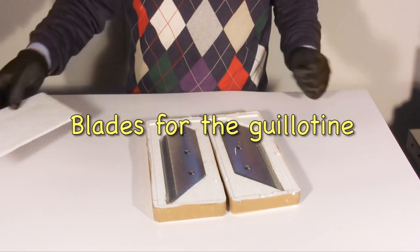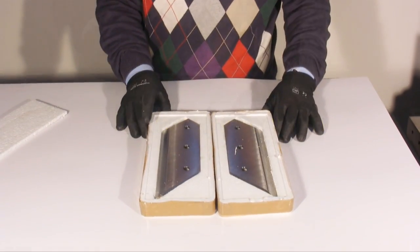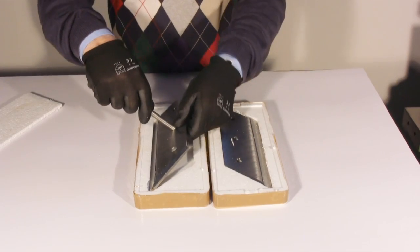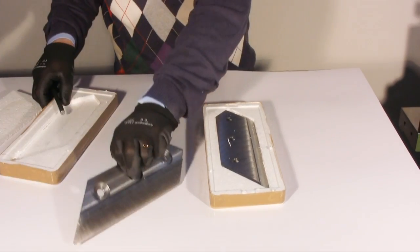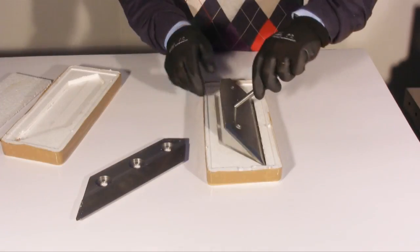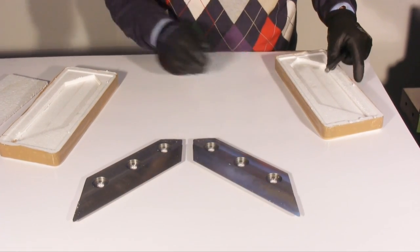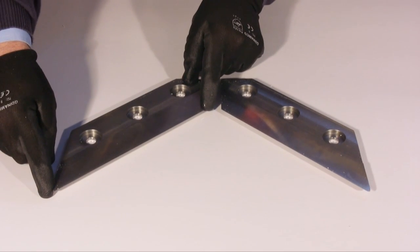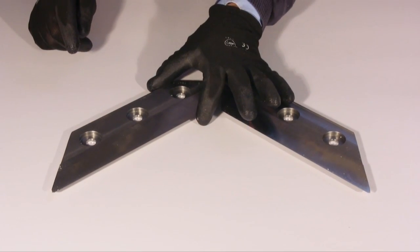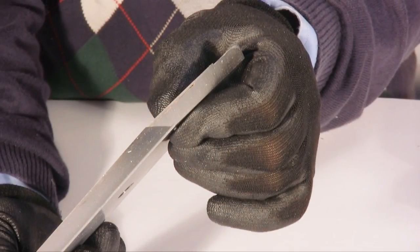These are the blades by Morso which are used as a reference for most of the guillotine manufacturers. These blades are 22 cm long and 7.7 cm high and they are 9 mm thick.